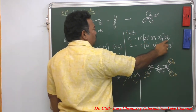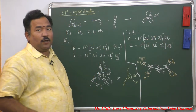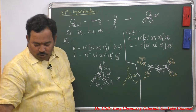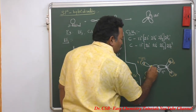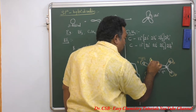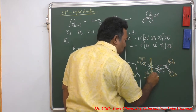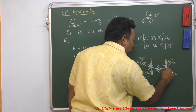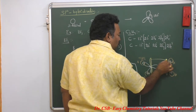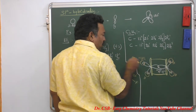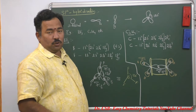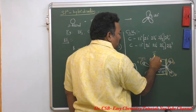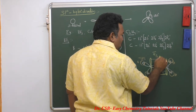Each carbon atom also possesses one unhybridized p orbital to make a pi bond. This is the unhybridized p orbital on one carbon and here also an unhybridized p orbital on the other. There is a pi bond between these two pure p orbitals, represented as pi pz–pz.